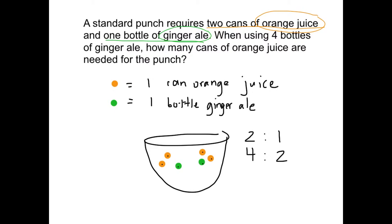Because we're following a two-to-one ratio, we can say that these two ratios are equal. But we haven't answered the question yet. The question said: when using four bottles of ginger ale, how many cans of orange juice do we need? How many bottles of ginger ale should I draw inside my bowl? Four. So how many more do I need to draw? Since I already have two, I'm going to draw two more. But what happens every time I draw one bottle of ginger ale? How many cans of orange juice need to be added? Two.